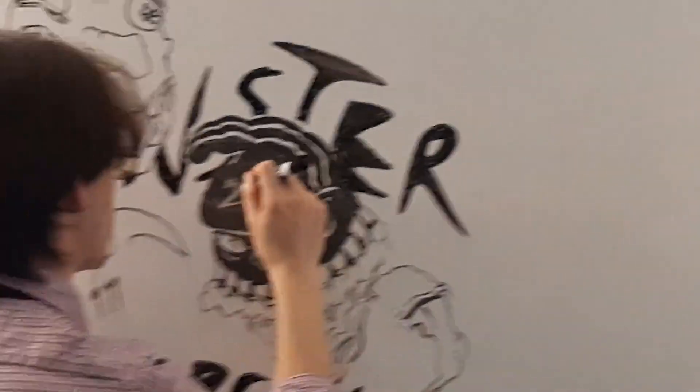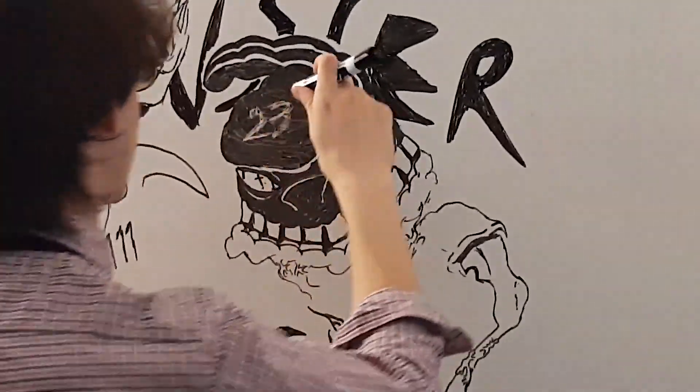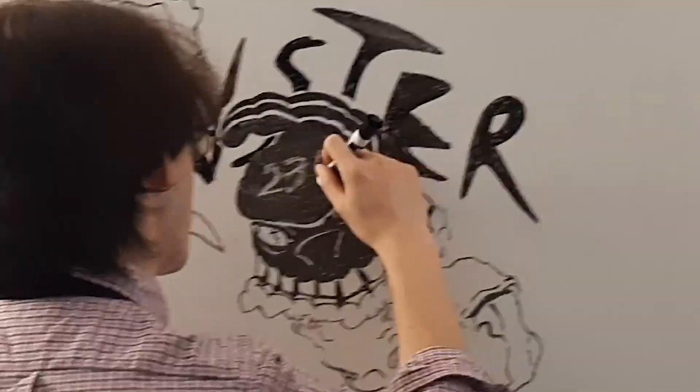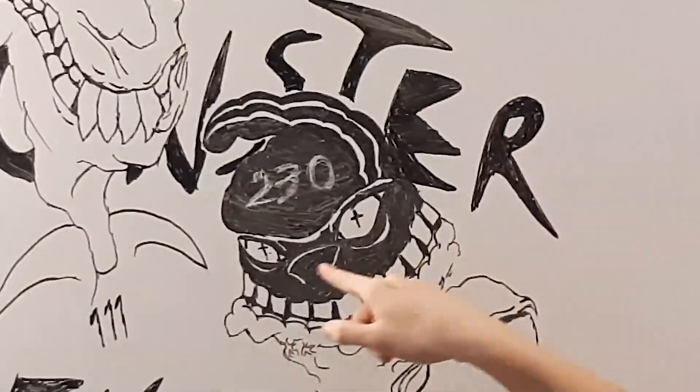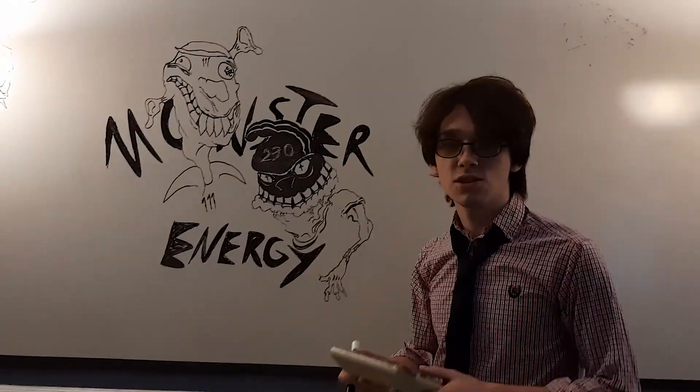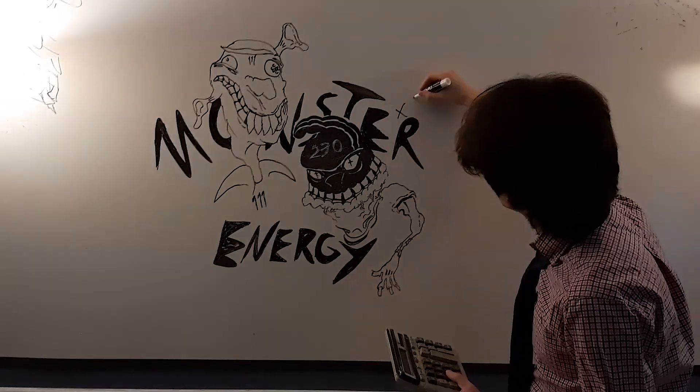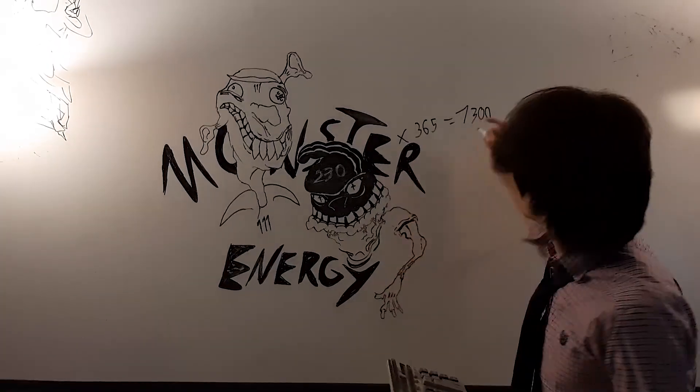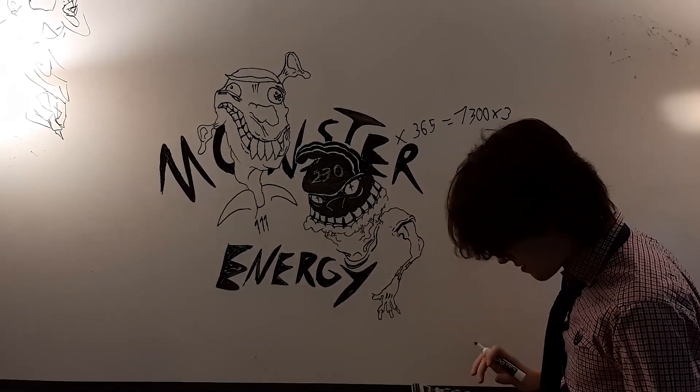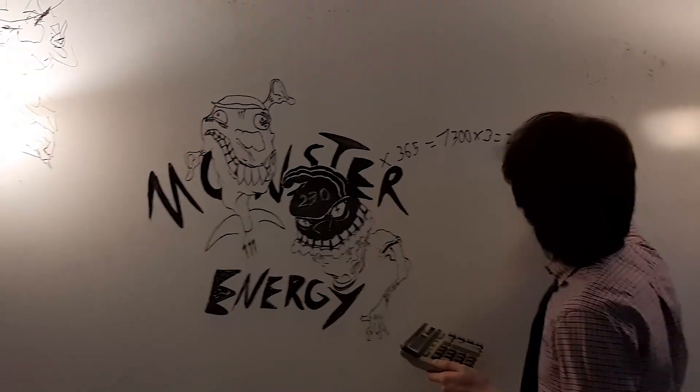230 calories here. Let me just ingrain this in the monster brain here to represent what it truly is. We got 230 calories in each monster here. Let's do some quick math. 230 times 365 equals 7,300 calories. Let's do that times three here. So that equals 21,900 calories over three years.